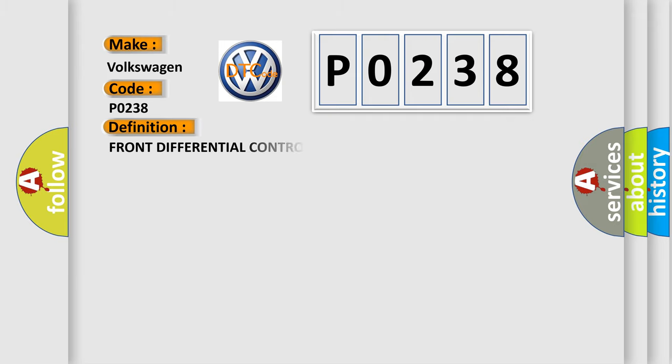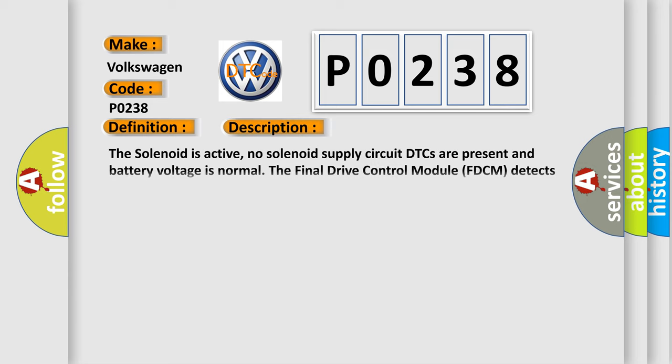The basic definition is Front differential control circuit high. And now this is a short description of this DTC code.